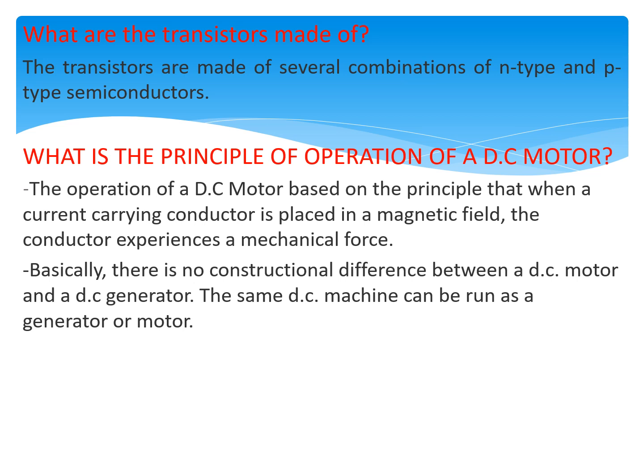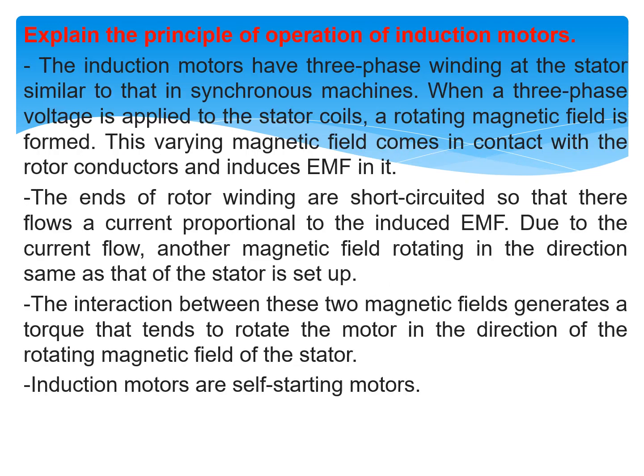What is the principle of operation of a DC motor? The operation of a DC motor is based on the principle that when a current-carrying conductor is placed in a magnetic field, the conductor experiences a mechanical force. There is no constructional difference between a DC motor and a DC generator — the same DC machine can be run as either a DC generator or a motor.